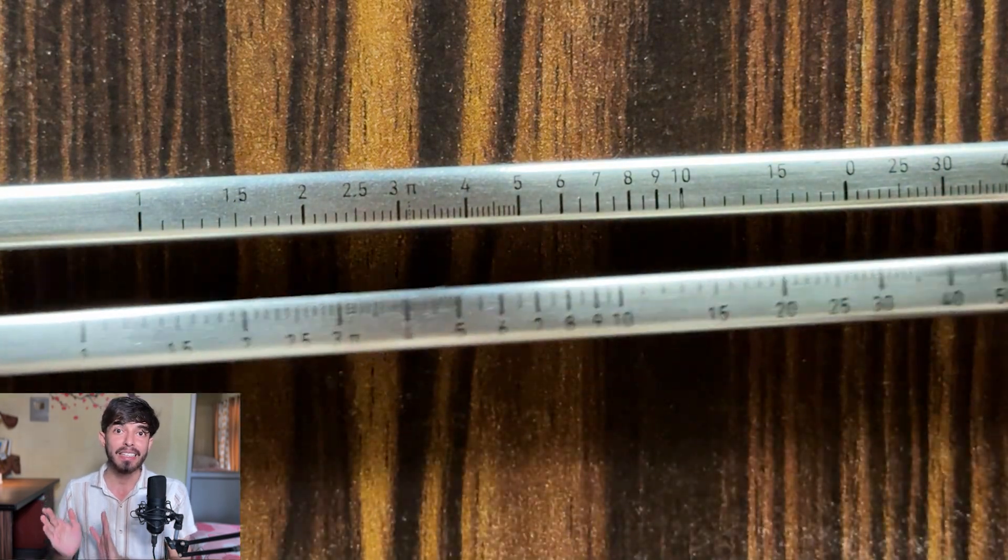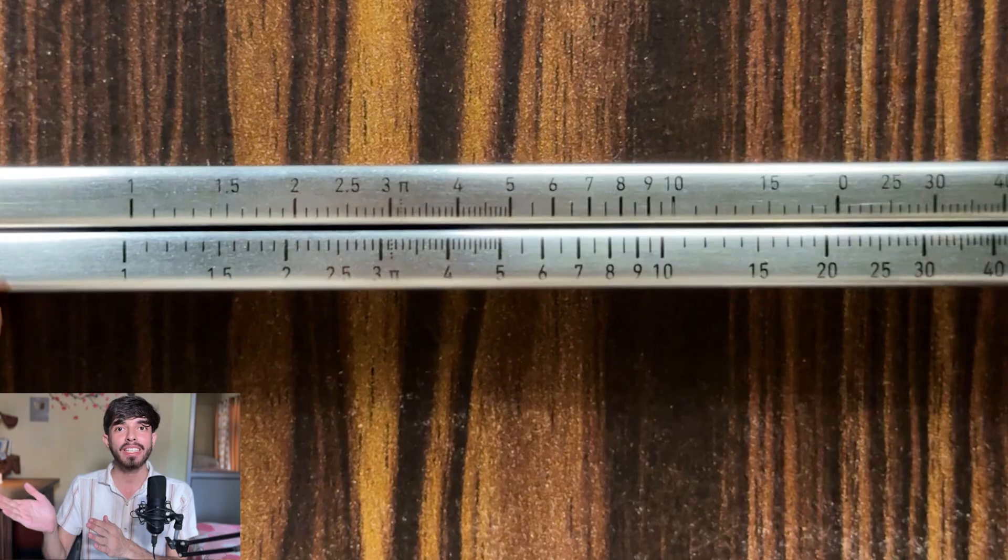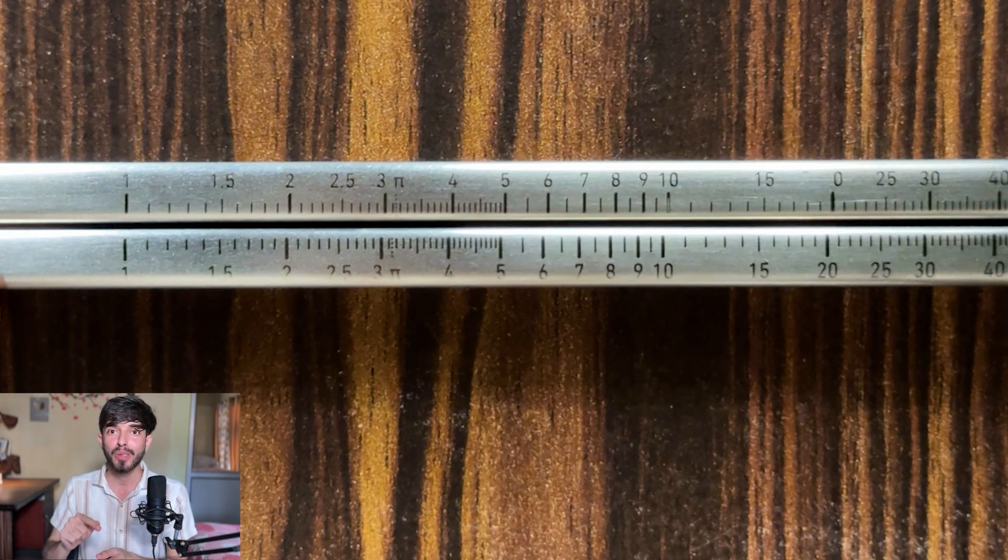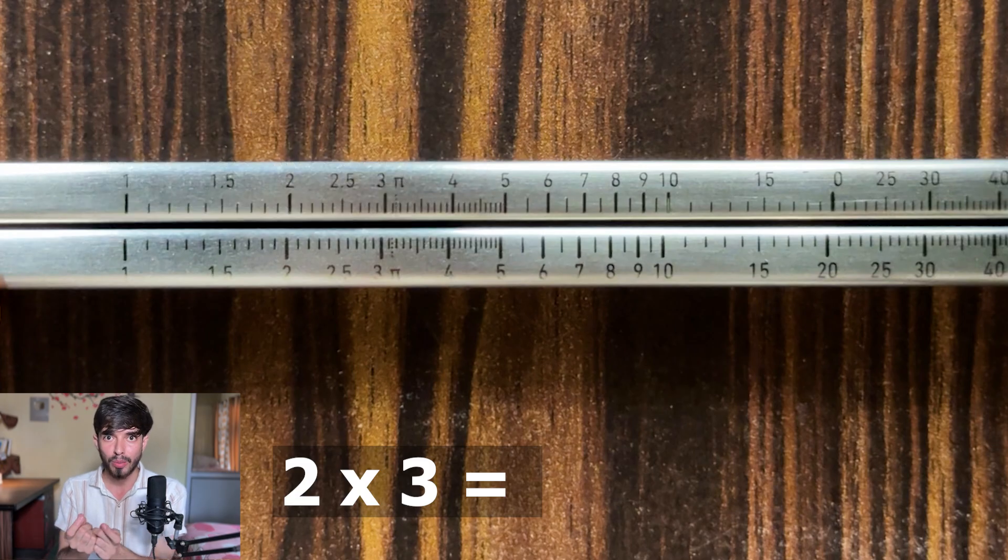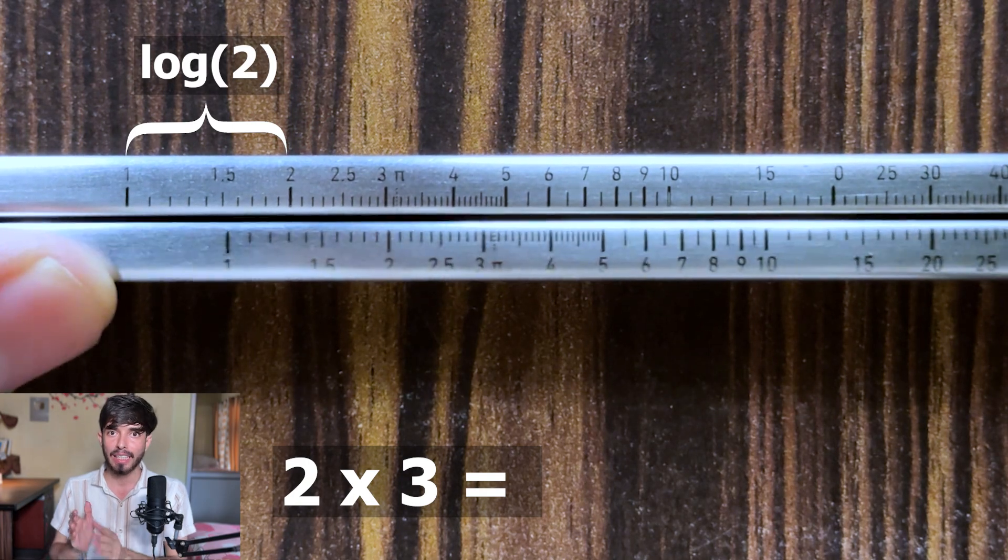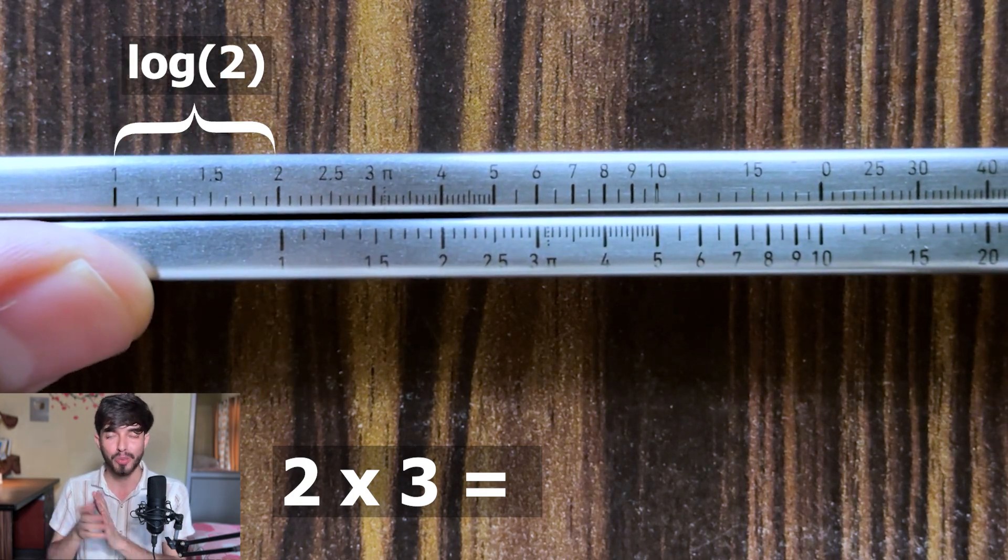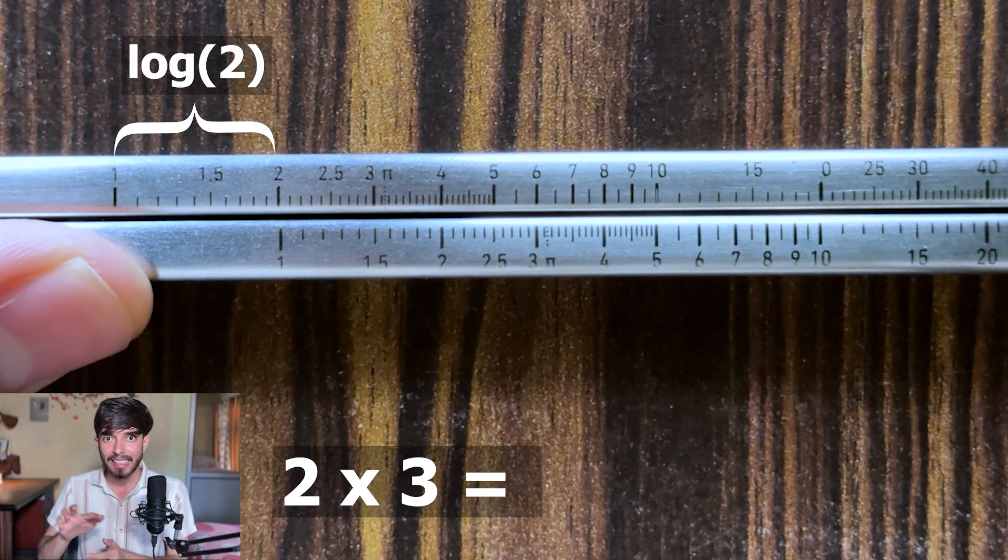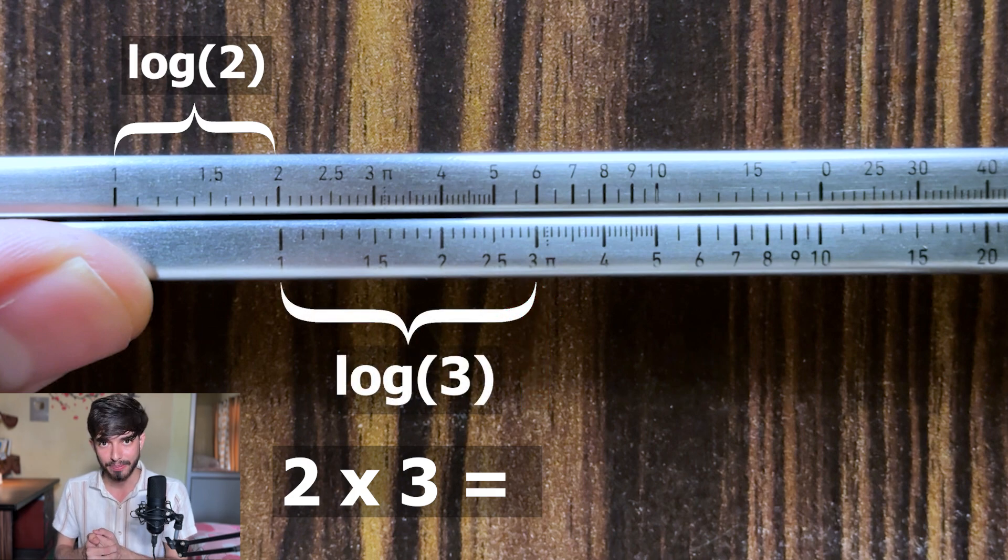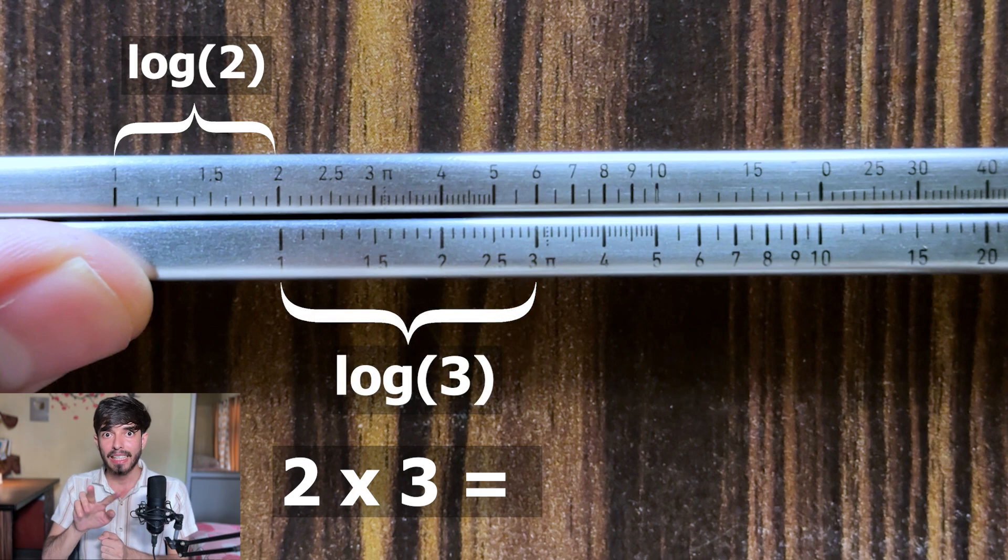It's simple. We take another chopstick with the same scale on it and now we will do the sliding. Suppose you want to multiply 2 times 3. So see on this top one there is this 2. So this length is log of 2. Now slide the bottom scale so that 1 is below 2. Now find 3 on it. Now this length is log of 3.